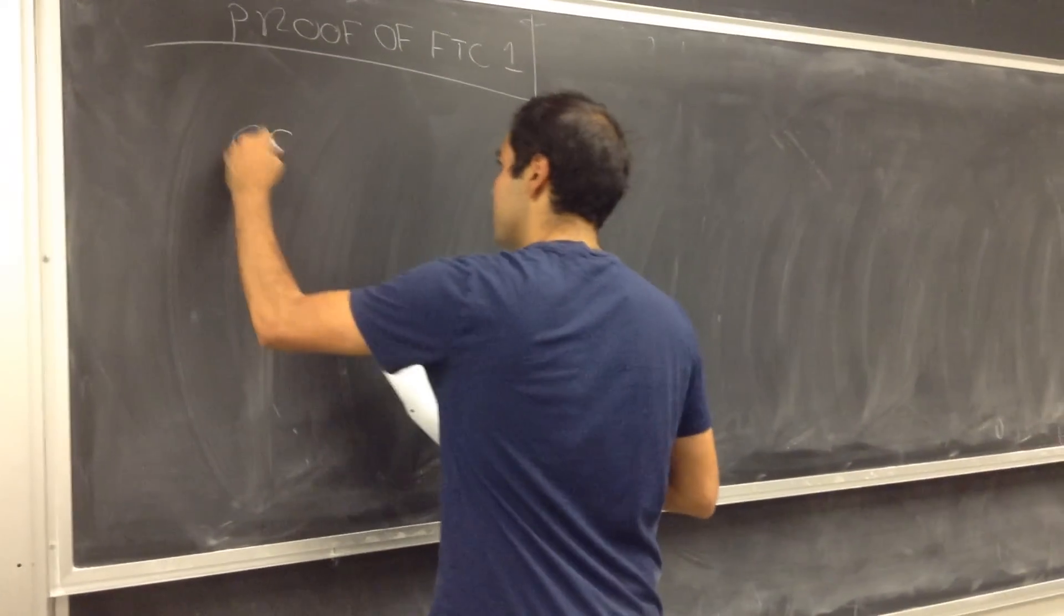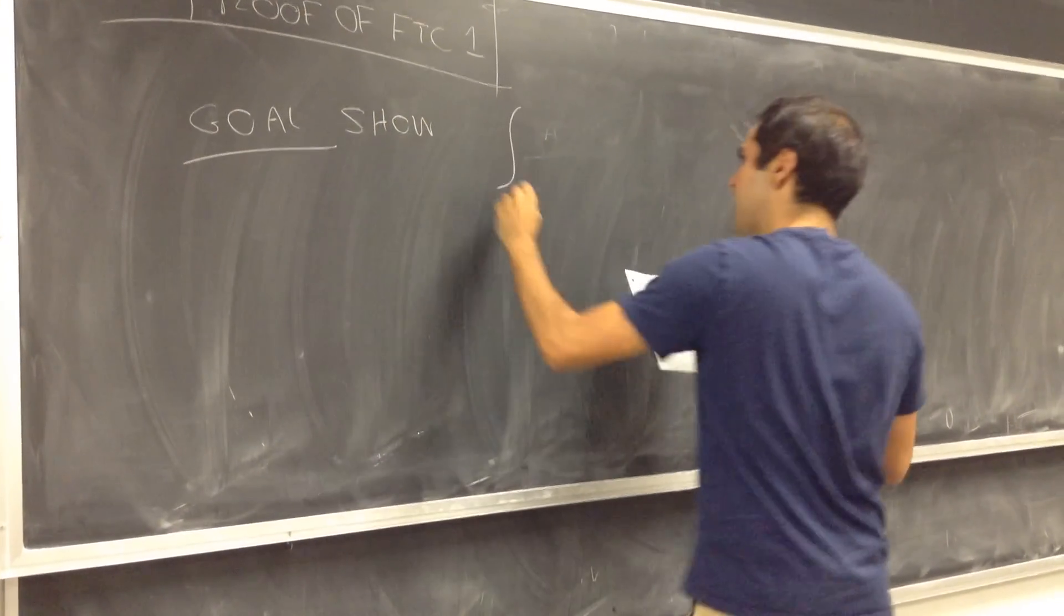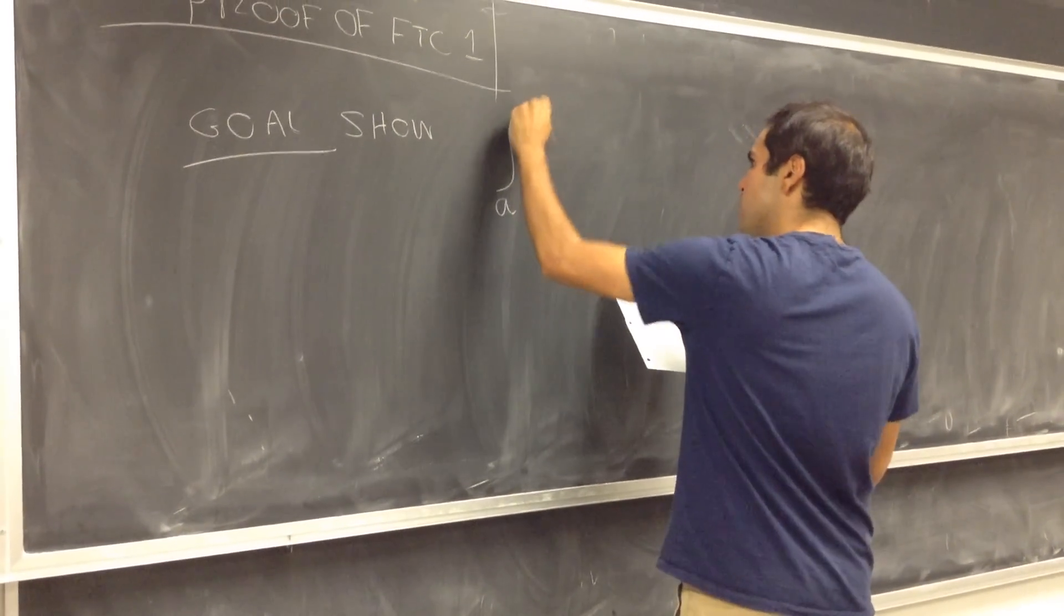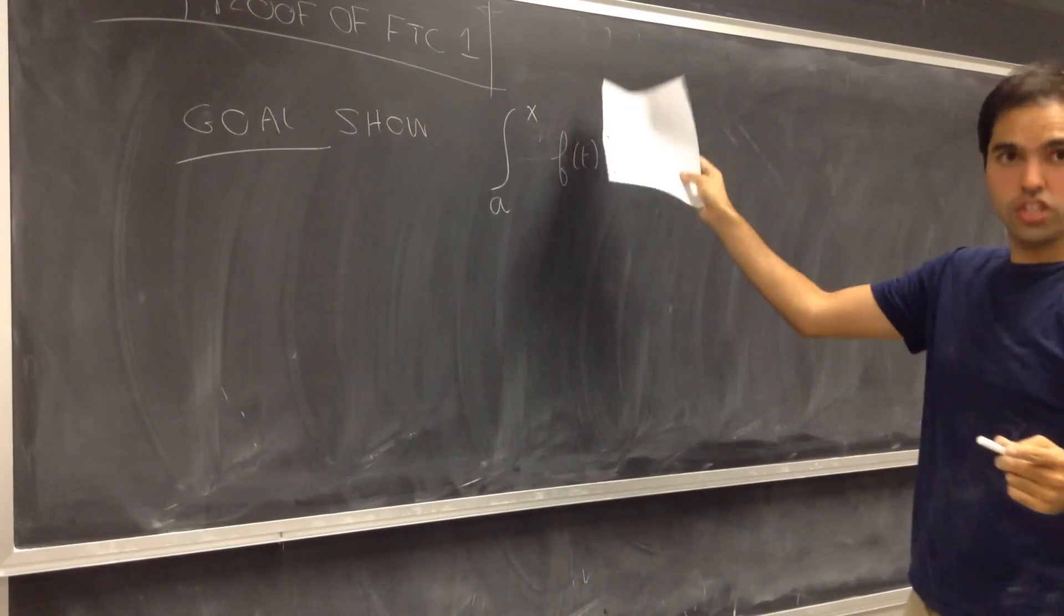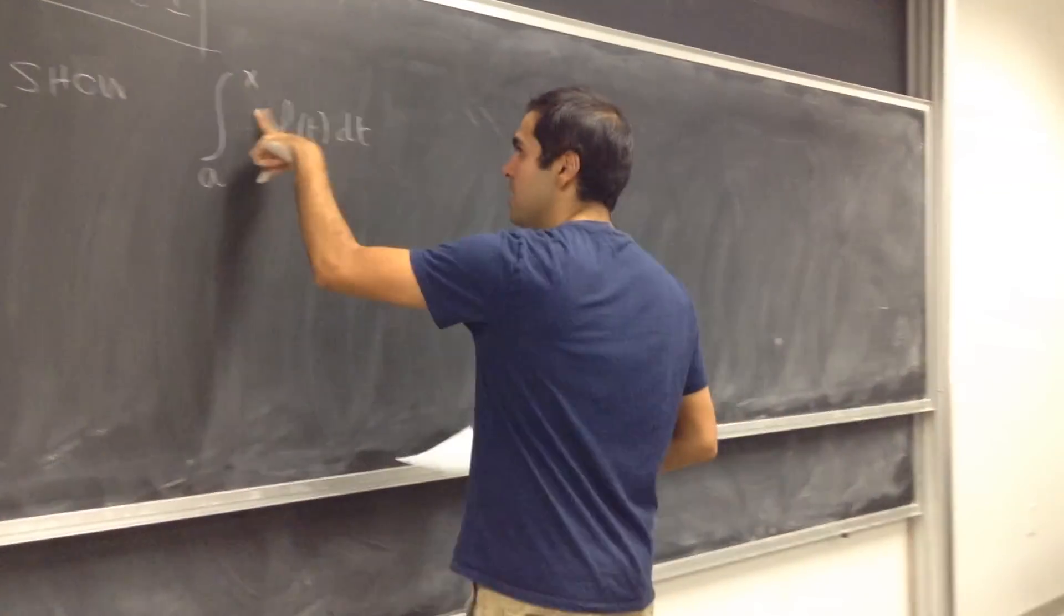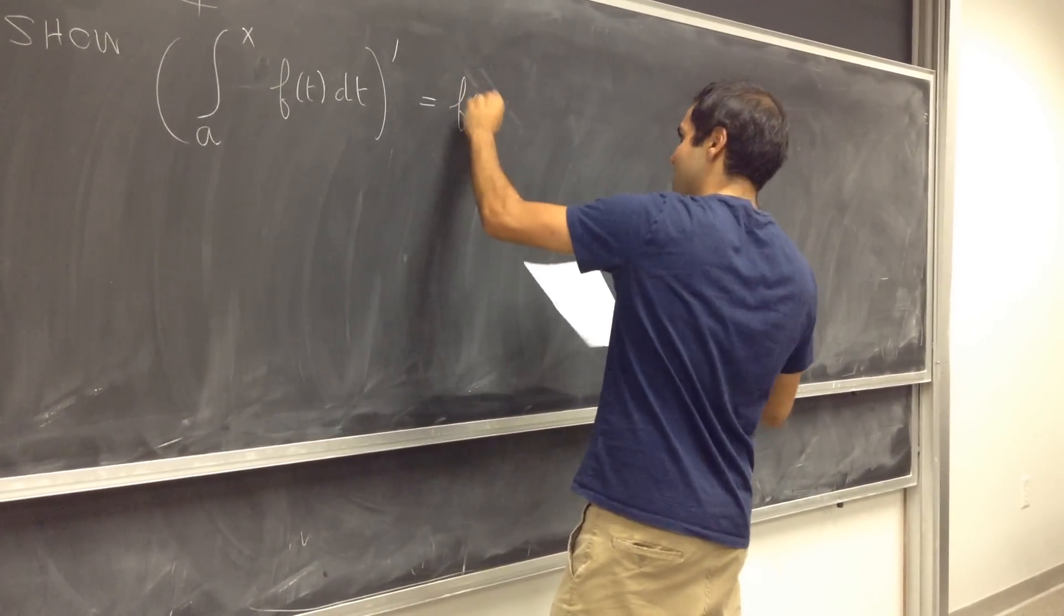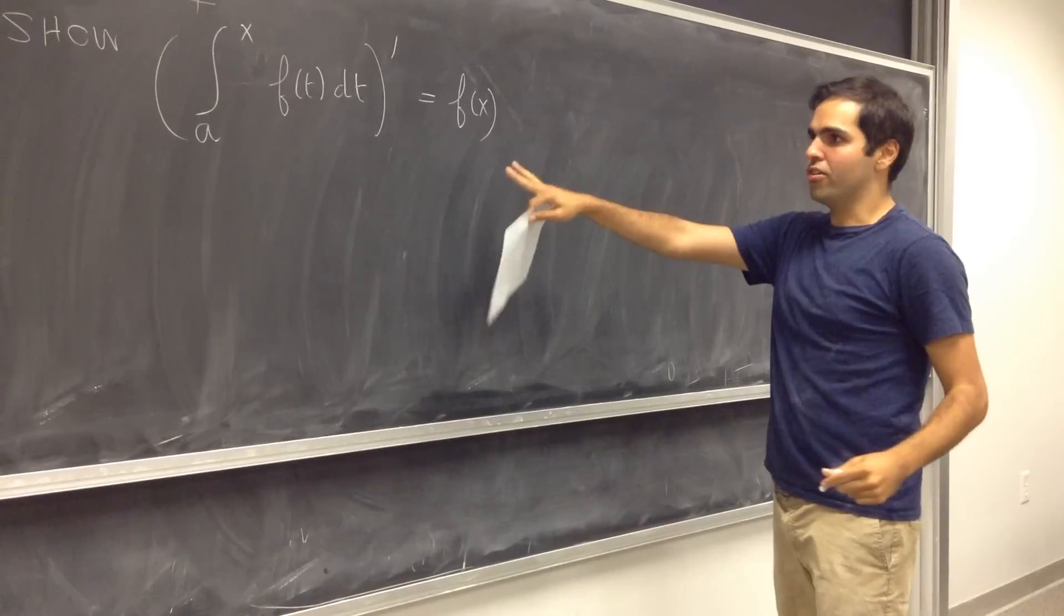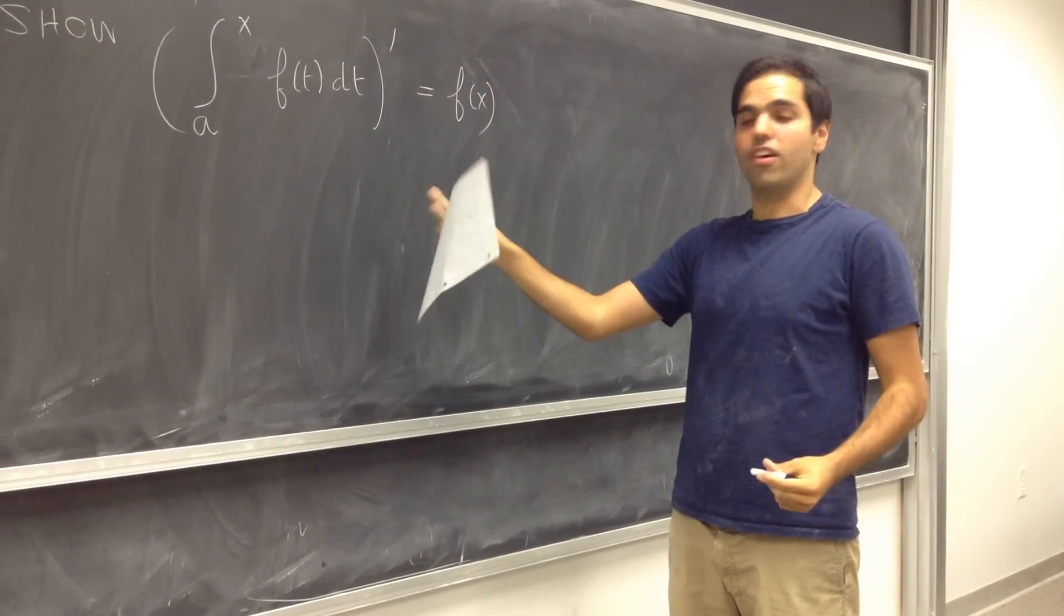So our goal is to show that if you take the function, integral from a to x of f of t dt, and again this is a function of x and not t, if you differentiate that, you in fact get f of x back. In other words, let's show that the derivative of the integral is the function itself.